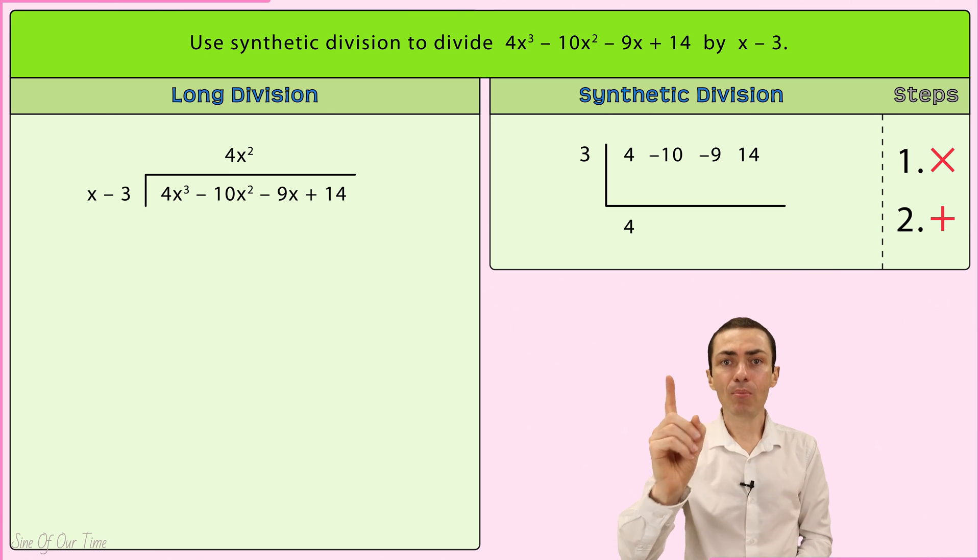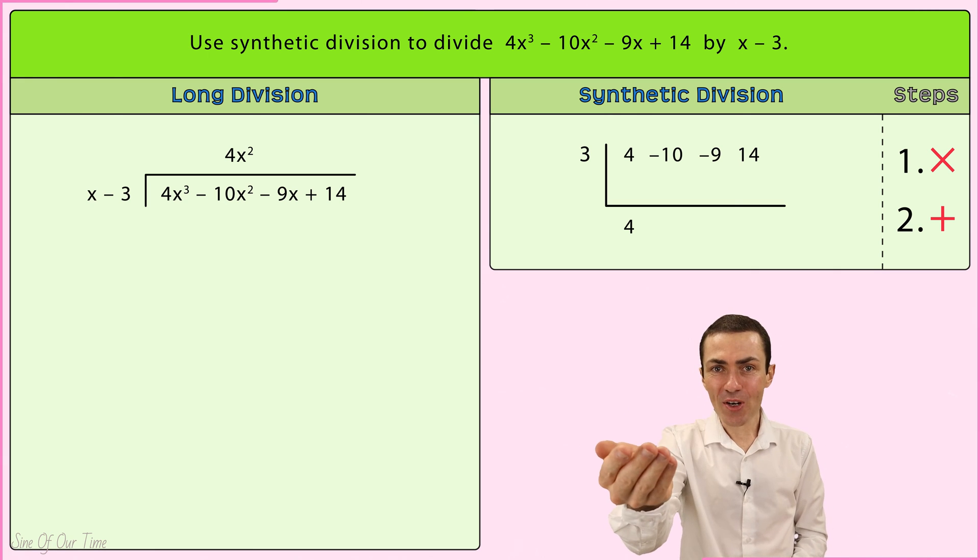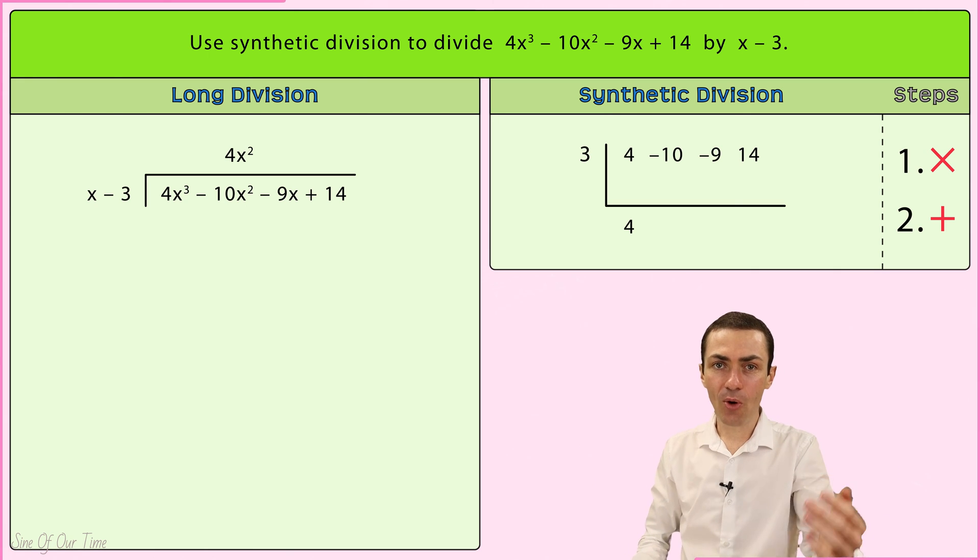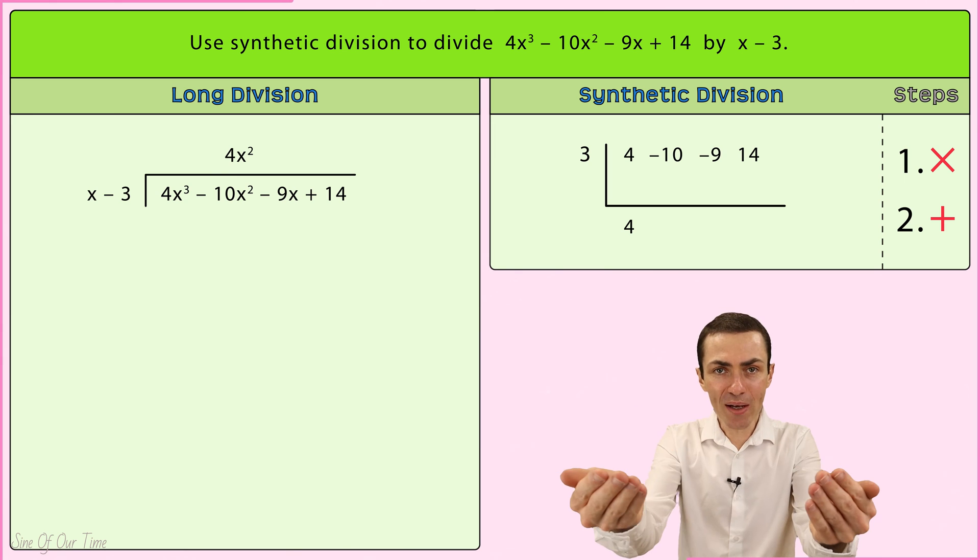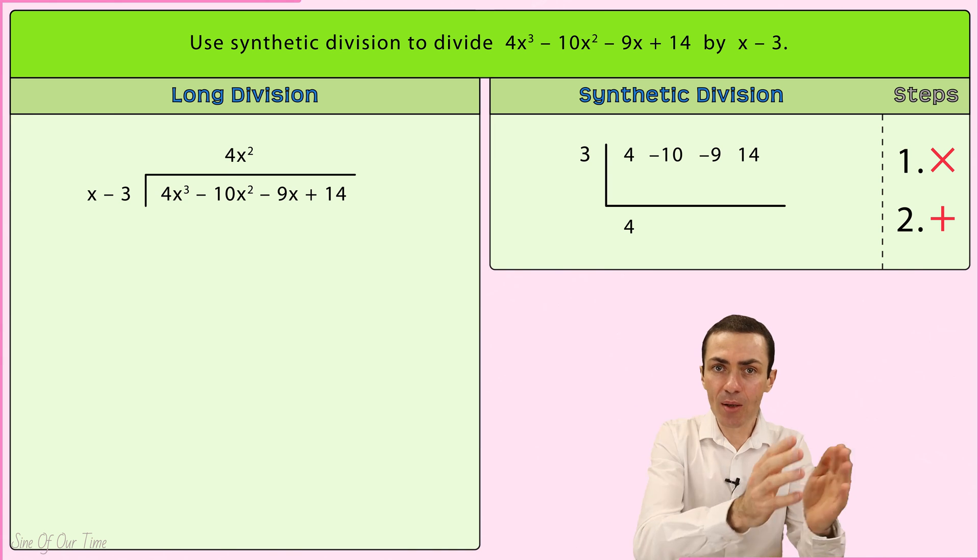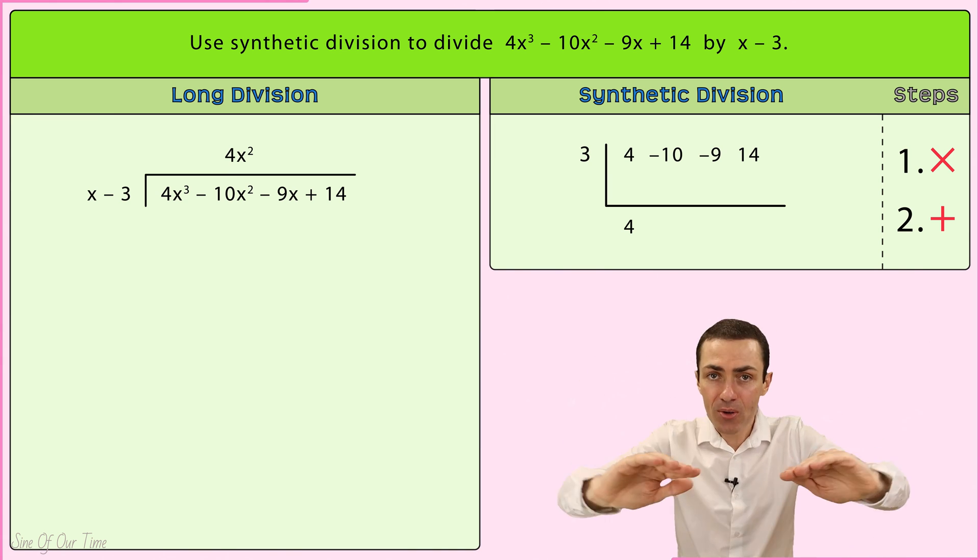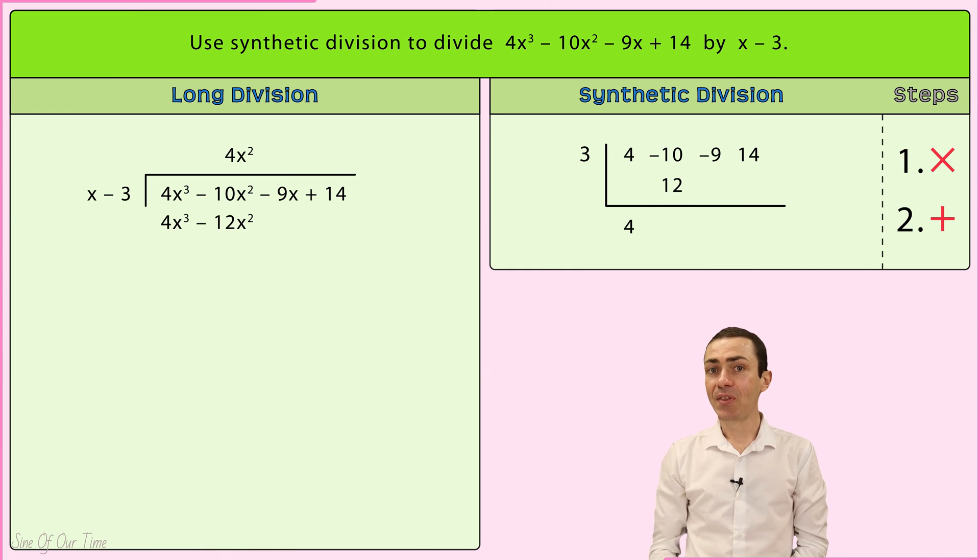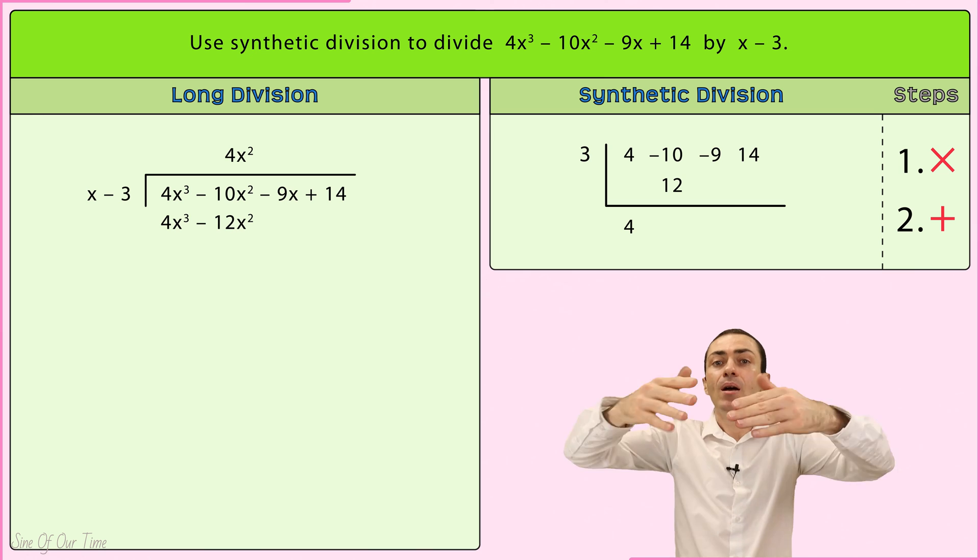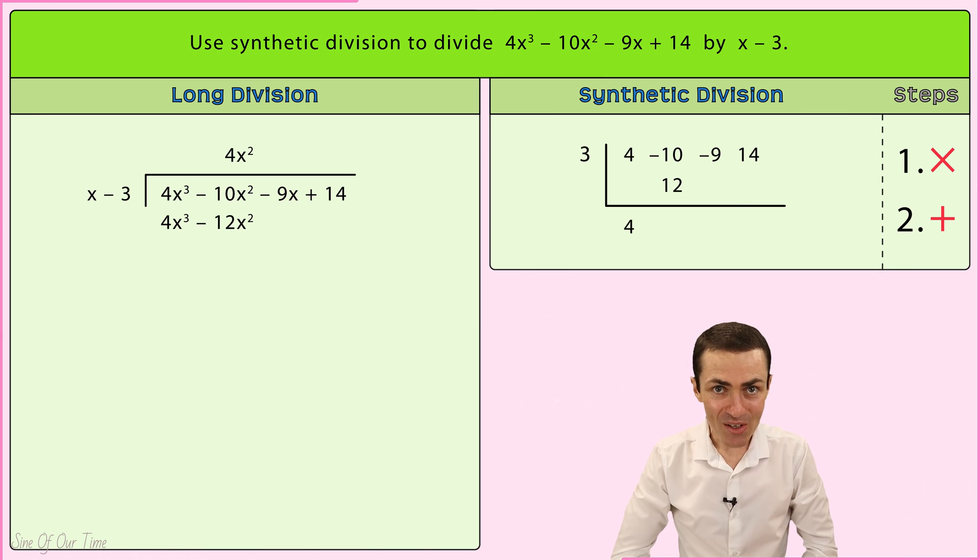Step 1, multiply. We take the 3 and we multiply it by the 4 in order to give us 12, which we write one column over to the right below the negative 10. And then step 2, add. Negative 10 add 12 gives us positive 2, which we write in the same column below the synthetic division symbol.